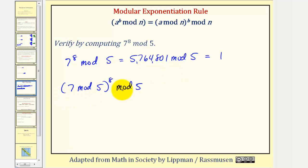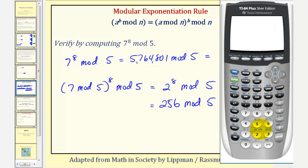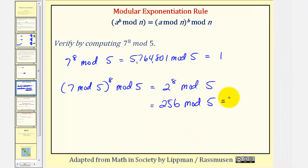So we should get the same result using the exponent rule. Seven mod five equals two, since dividing seven by five gives remainder two. So this becomes two raised to the eighth mod five. Two to the eighth is 256, and 256 mod five — on the calculator, 256 divided by five, minus 51, times five — also gives us one. This verifies our exponent rule.